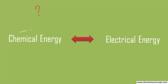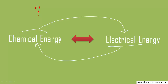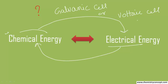An electrochemical cell is a device used to convert chemical energy into electrical energy, or electrical energy into chemical energy. Those cells which convert the energy of spontaneous redox reactions into electrical energy are known as galvanic cells or voltaic cells. Those which use electrical energy to carry out chemical reactions are known as electrolytic cells.